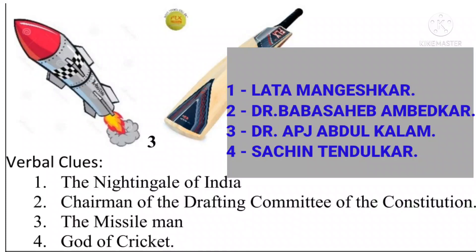The fourth awardee is the god of cricket. The picture clue given is a bat and ball. Sachin Tendulkar is the god of cricket and was awarded the Bharat Ratna. In this way, from the clues and pictures, we can identify the names of the awardees. You can also take the help of the internet.